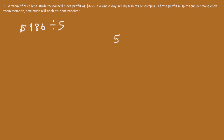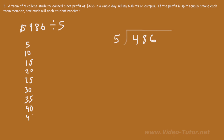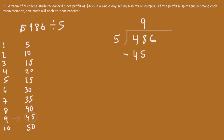Let's use long division. How many times does 5 go into 48? 5 doesn't go into 4, so we see how many times 5 goes into 48. It's helpful to list multiples of 5: 5, 10, 15, and so forth, up to 50. The highest multiple of 5 just under 48 is 45. So 5 goes into 48 nine times. 5 times 9 is 45. 48 minus 45 is 3. Then we bring down the 6.